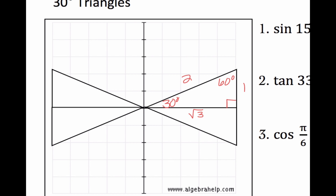That's something we just need to memorize. Always opposite from 30 degrees is 1. Opposite from 30 degrees, we have 1. Opposite from 60 degrees, we have radical 3. And our hypotenuse is always going to be 2.